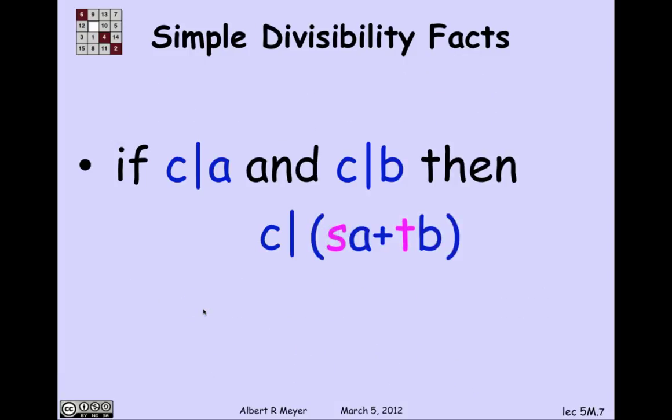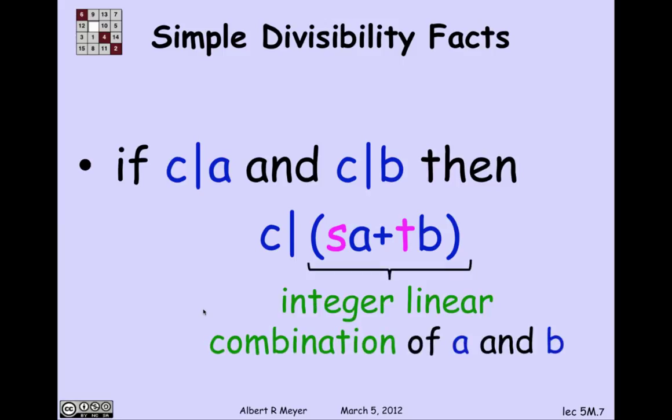Let's put those facts together. If C divides A and C divides B, then C divides SA plus TB, where S and T are any integers at all. So a combination of two numbers A and B like this is called a linear combination of A and B, an integer linear combination. But since we're only talking about integers, I'm going to stop saying integer linear combination and just say linear combination. A linear combination of A and B is what you get by multiplying them by coefficients S and T and adding them.